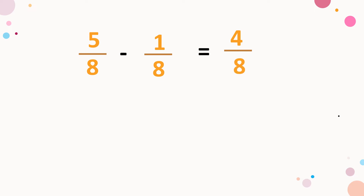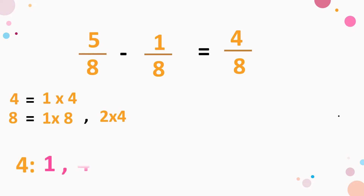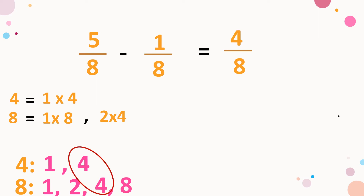Now, reducing this to lowest term by finding the greatest common factor of four and eight. For four, we have one and four. For eight, we have one, two, four, and eight. The greatest common factor here is four. So four divided by four, that is one. And eight divided by four is equal to two. So one-half.